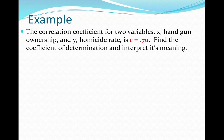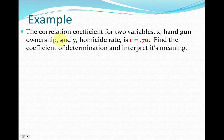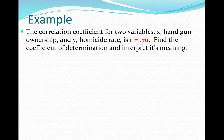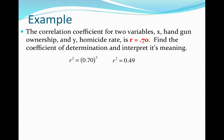Here's a practice example. The correlation coefficient for two variables — x representing handgun ownership and y representing homicide rate — is r = 0.70. You are provided with the independent variable x (handgun ownership) and the dependent variable y (homicide rate), along with the correlation coefficient r = .70. Find the coefficient of determination and interpret its meaning. To find it, simply square .70: r squared equals .49, which expressed as a percent is 49%.